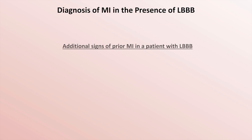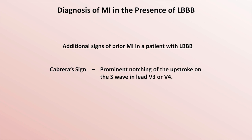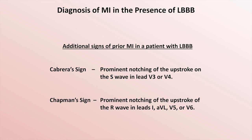The SCARBOSA criteria, including this abridged version, has a poor sensitivity of around 20 to 35%, but an excellent specificity of over 90%. There are two additional signs of an MI in a patient with a left bundle, seen in subacute and chronic MIs. Cabrera's sign is a prominent notching of the upstroke on the S wave in leads V3 or V4. The Chapman sign is a prominent notching of the upstroke of the R wave in leads 1, AVL, V5, or V6. As with the SCARBOSA criteria, these are specific but not sensitive.